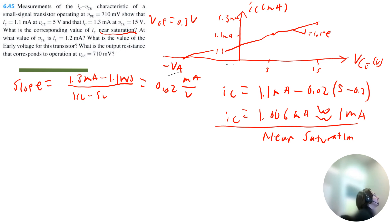At what value of VCE is IC 1.2 milliamps? Okay, so that would just be, if we start at this 5 volt point, it would be 5 volts plus 1.2 milliamps minus 1.1 milliamps, and then we're going to divide that by the slope to get 10 volts, which makes sense, right? It's right in between these two values.